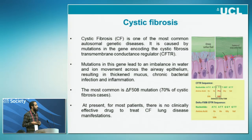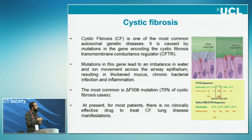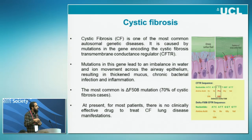Cystic fibrosis is one of the common autosomal genetic diseases. It's affecting many organs, but it's more lethal when it's involving the lung. It's caused by a mutation in a gene encoding the cystic fibrosis transmembrane conductance regulator — the CFTR — which is necessary for chloride transport and for maintaining the water balance above the epithelium cells, which is necessary for cilia beating.